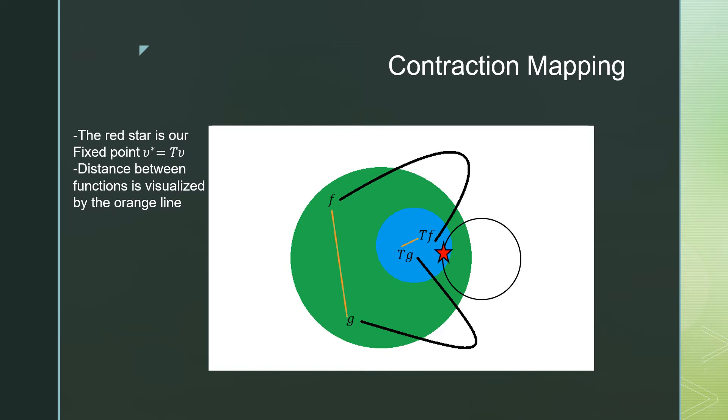If we were to iterate T of F of G again, we would probably get some value closer to this red star here, which is our fixed point. And once we're at that fixed point, we can stay at that fixed point if we were to solve that again. Thus, we have convergence to an optimal value function.